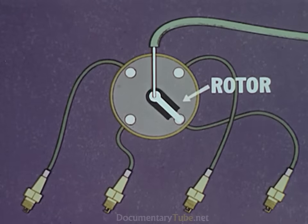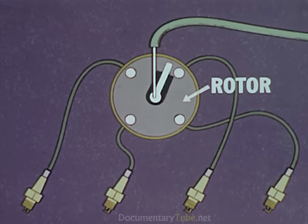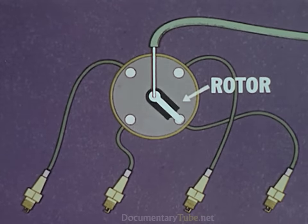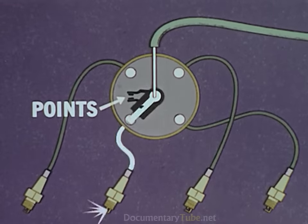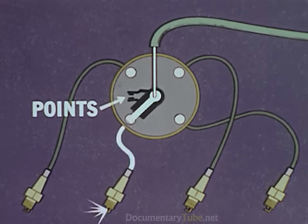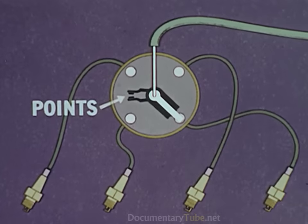Inside the distributor is a rotor, which as it turns touches a series of contacts, one of which is wired to each spark plug. The points open and close as the rotor turns, interrupting the current to produce the fuel igniting spark.